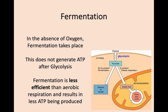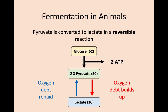To finish off respiration, let's quickly talk about what happens if oxygen is not present after glycolysis and the further aerobic processes cannot take place. In this instance, a process called fermentation occurs, meaning ATP is not generated after glycolysis. Fermentation is far less efficient than aerobic respiration because only two molecules of ATP are produced compared to 38. In animals, glycolysis still takes place with a net gain of two ATP and pyruvate is still produced. However, without oxygen, this pyruvate cannot go through the citric acid cycle and is instead converted into a molecule of lactate.